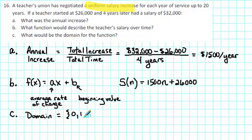And then when n is 1, that would give us the salary after one year. 2 would give us the salary at the beginning of the second year. And then we would continue substituting in values. But this is only good for service up to 20 years, so we would include values up to 20. So the domain is equal to the set of n values that include 0, 1, 2, all the way up to 20.